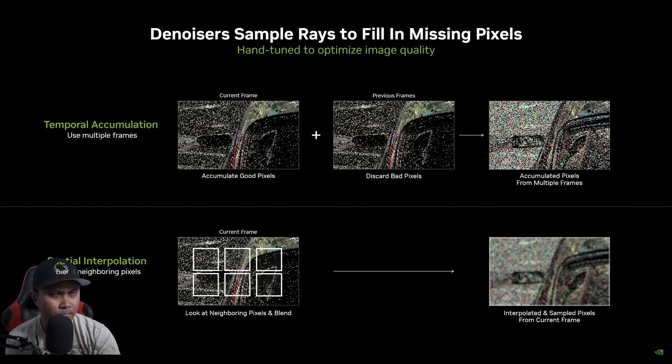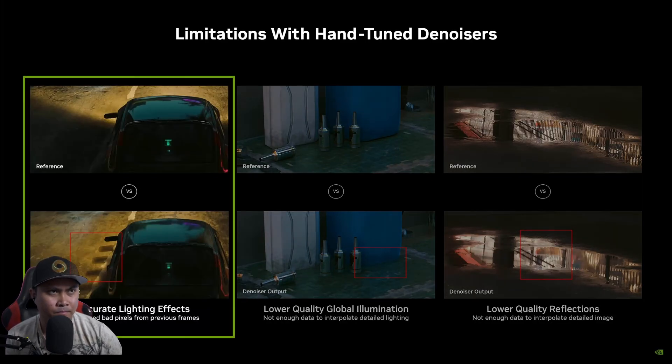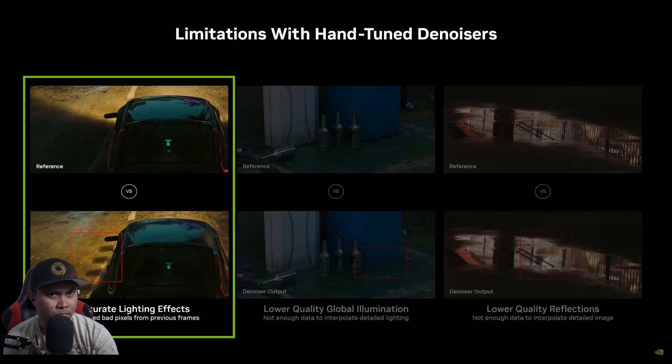Denoisers accumulate pixels from prior frames — in effect stealing rays from the past — in order to increase detail, but they do so at the risk of introducing ghosting and removing dynamic lighting effects. For example, here you can see ghosting that's introduced when the denoiser grabs information from the past.